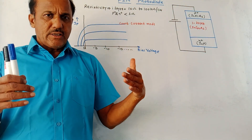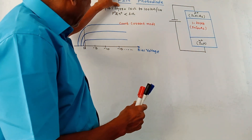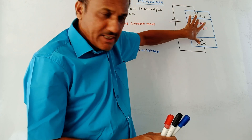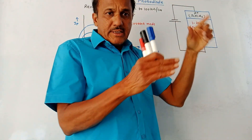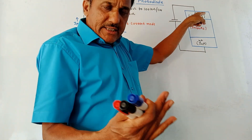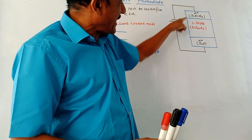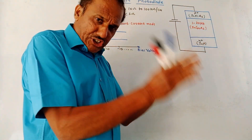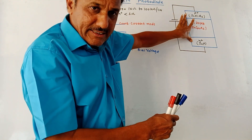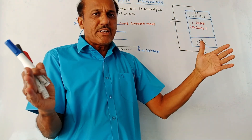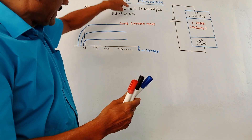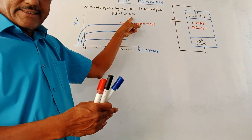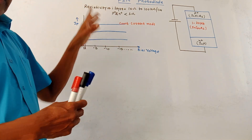The next device is the PIN photo diode, very similar to the conventional PN junction photo diode apart from slight changes. As the name indicates, between the P+ and N+ regions, one intrinsic layer — the I layer — is inserted. This is an undoped intrinsic region. The working remains the same as the conventional photo diode; it is reverse biased with P side connected to the negative terminal and N side to the positive terminal. The resistivity of the I layer is from 10 ohm to 100 kilo ohm per centimeter, whereas the resistivity of P+ and N+ regions is less than 1 ohm. This is the graph of voltage versus current for the PIN photo diode.